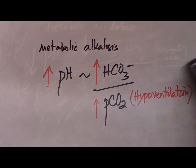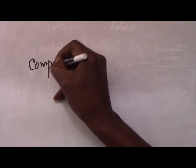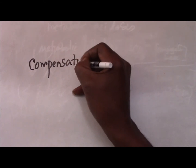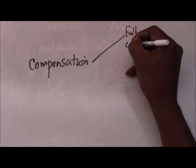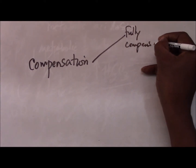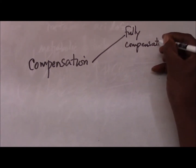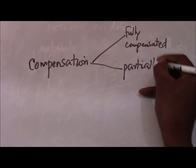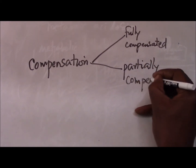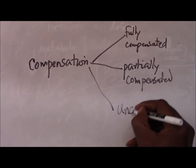Now, having said that, it is important to point out that compensation can take one of three forms. It could be a case that is fully compensated, or it could be a case that is partially compensated, or thirdly, it could be a case that is uncompensated — that is, not compensated at all.